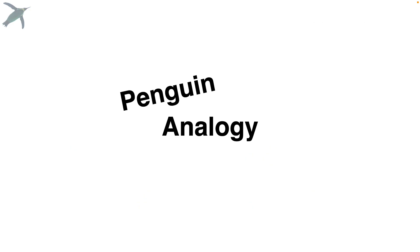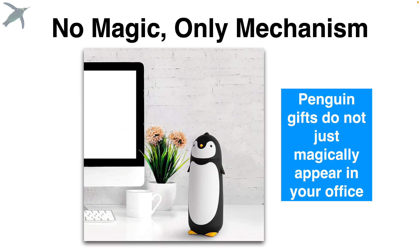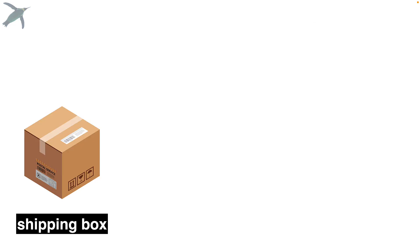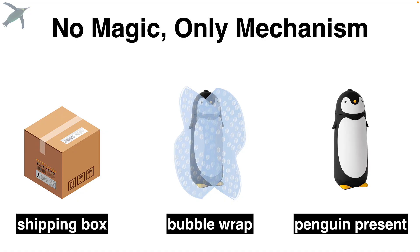I've got an analogy. It's penguins, of course. Penguin gifts don't just magically appear in your office or bedroom. We start with a shipping box. The shipping box gets the gift where it needs to go, but you don't keep the box. Inside the box, you have bubble wrap or some kind of packing material. You don't keep that either. In order to use the gift, you have to take away those other things, and you end up with your penguin gift.